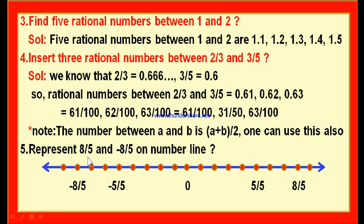Now we locate 8 by 5 on the right side of the number line and minus 8 by 5 on the left side. This point represents plus 8 by 5 and this point represents minus 8 by 5. Like this, you can represent rational numbers on the number line.